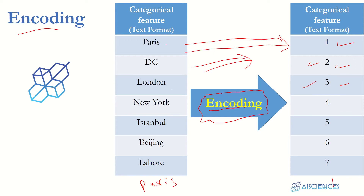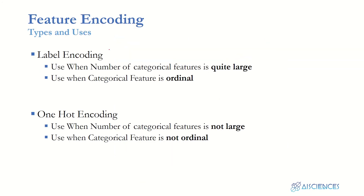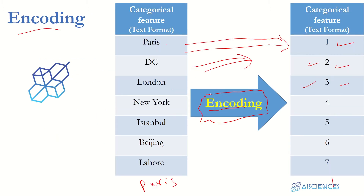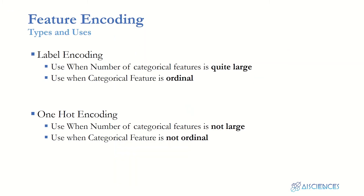Encoding is the way of converting categorical features to numerical features. There are two main types: label encoding and one-hot encoding. There are other encoding methods available in machine learning, but these two are the most famous and most frequently used. We'll learn what each is, when to use label encoding, when not to, and the same for one-hot encoding.